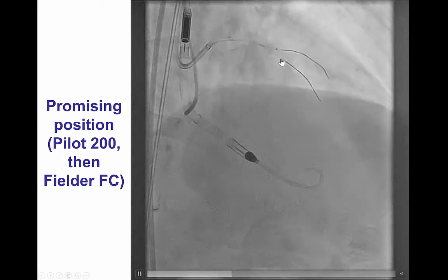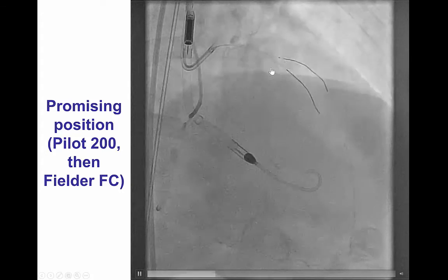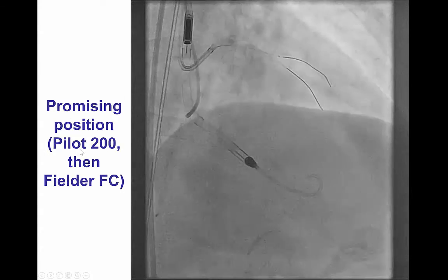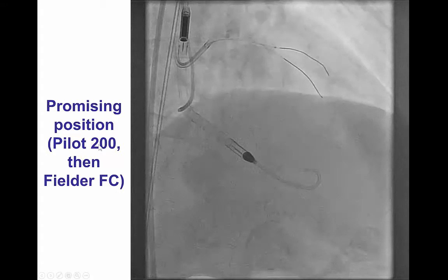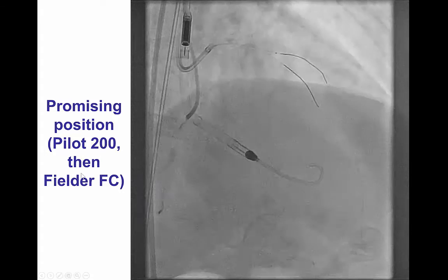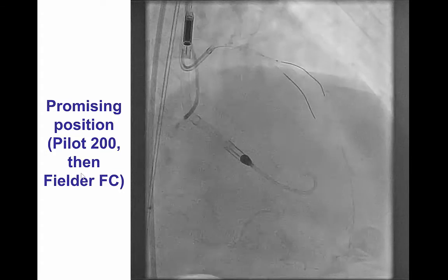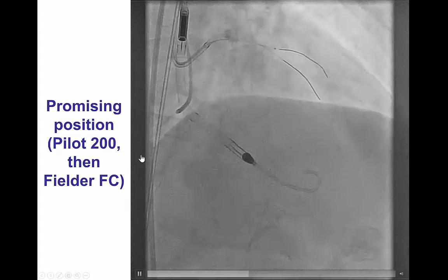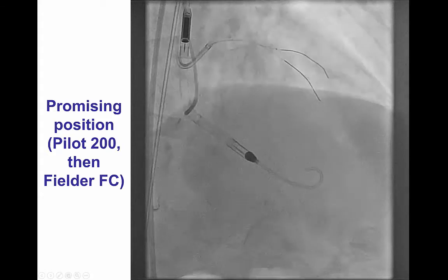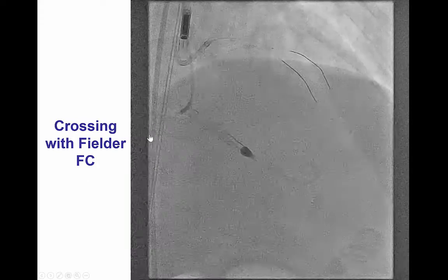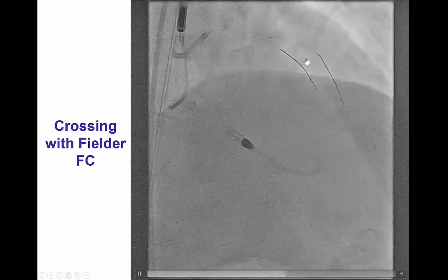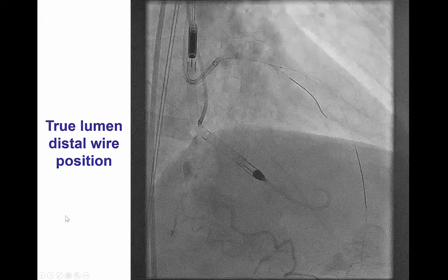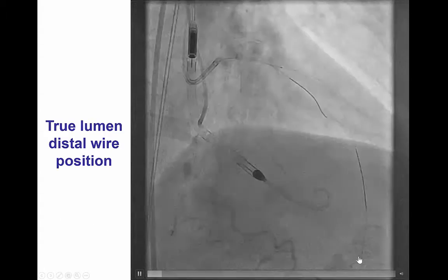The Finecross microcatheter was then advanced into the proximal cap, and guide wire escalation was performed. Unlike the usual sequence starting with a soft polymer guide wire, in some cases the Pilot 200 — a stiff polymer-jacketed guide wire — is used up front. In this case, we did not use a tapered tip polymer-jacketed wire like the Fielder XT or the Fighter, because we thought a microchannel might be present, and by using a non-tapered wire, the risk of dissection of the microchannel would be less. Fortunately, there was a relatively easy crossing with the Fielder FC guide wire, which advanced along the course of the LAD, confirmed with contralateral injection in two projections.